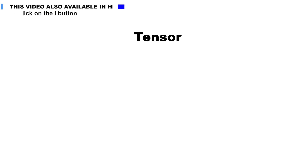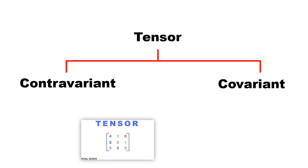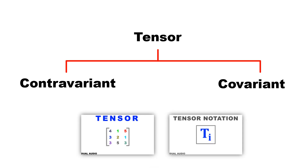While studying tensors, you must have read about contravariant and covariant tensors. But what is the meaning of contravariant and covariant tensor, and why have they been given this name? In this third video of the tensor series, we will learn what is the physical meaning of contravariant and covariant tensor with the help of some simple examples.